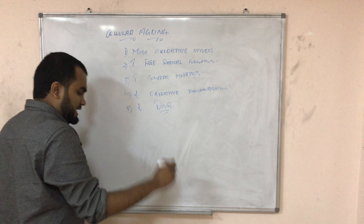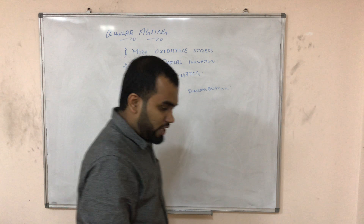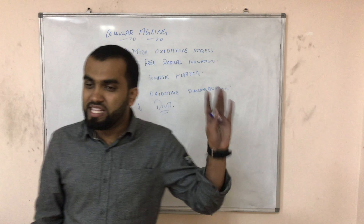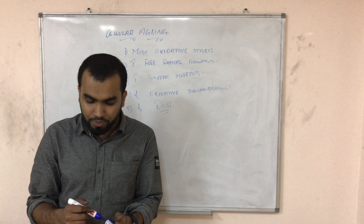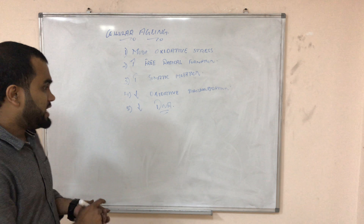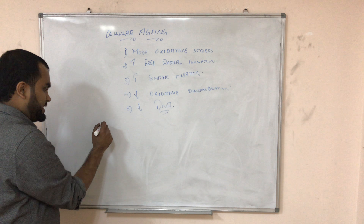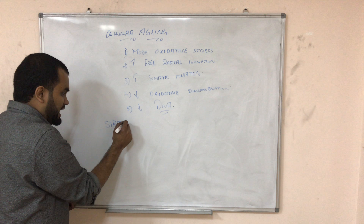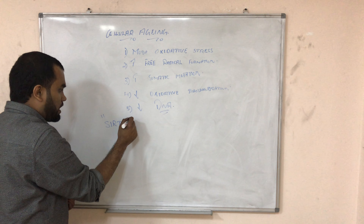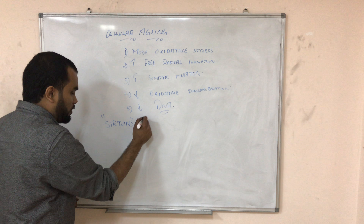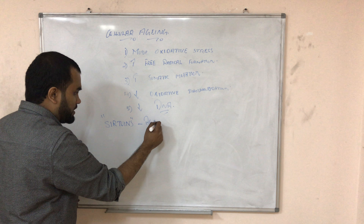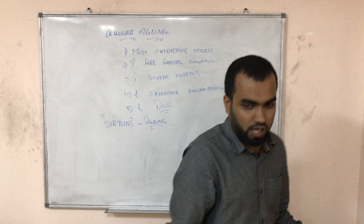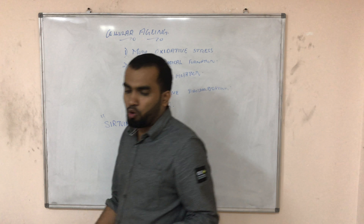There will also be decreased DNA repair. Aging is the reason everyone will die one day and no one can prevent it. There is a specific protein in your body called sirtuins, and this protein is responsible for our aging.